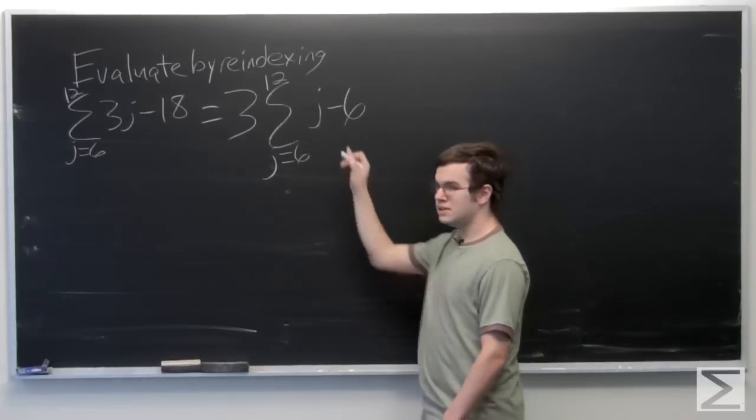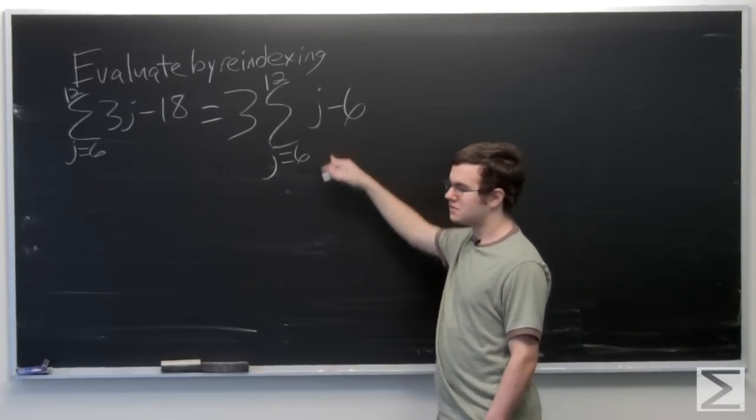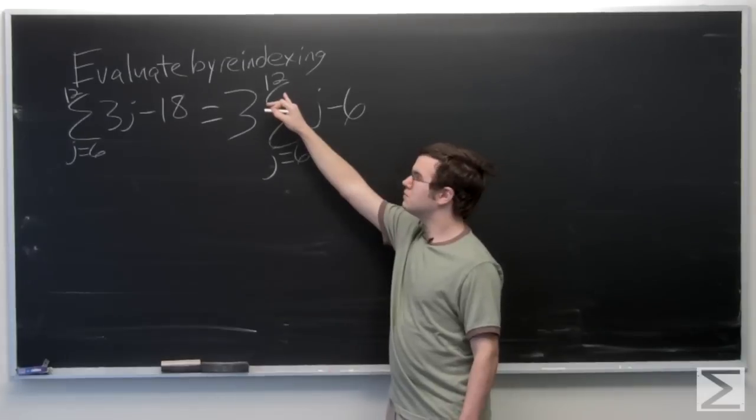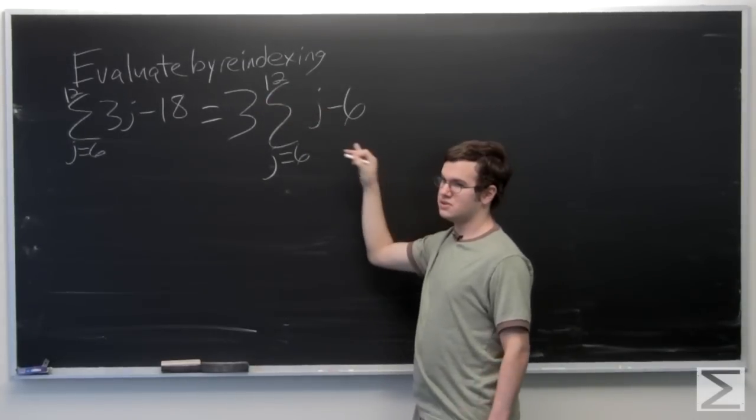Okay, and in order to re-index here, we have this j minus 6, and that means that the top number here, if you plugged it in for j, the top would equal to 6.